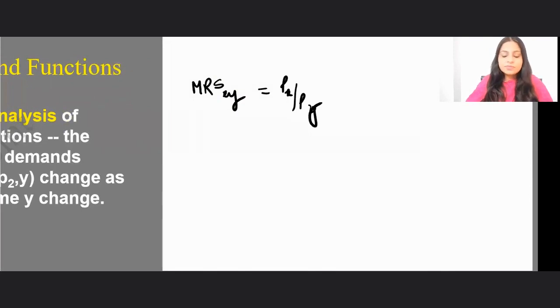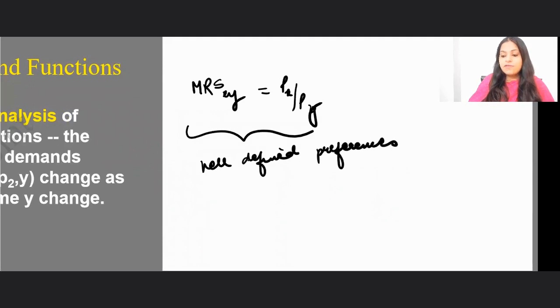So if I was talking about my well-defined preferences, then for these well-defined preferences we knew that, let's say my utility function is U(x,y) equals x to the power alpha, y to the power beta.